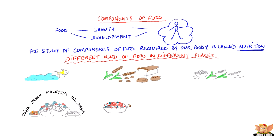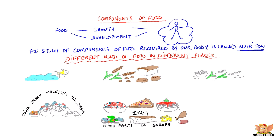Pasta, pizza and spaghetti are some common foods from Italy. People eat bread with cheese, salads and meat in other parts of Europe.